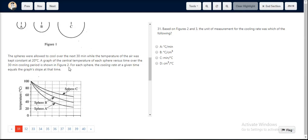For question number 31, we read this particular statement. For each sphere, the cooling rate at a given time equals the graph slope at that time.